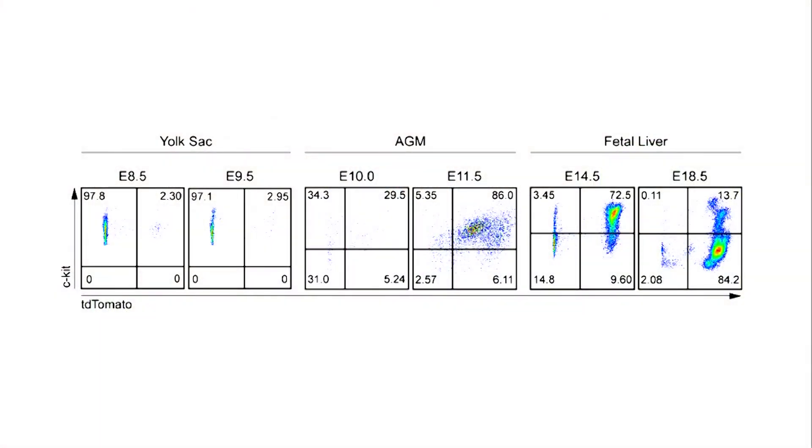The other thing we looked at — because it was quite controversial — is where do these cells come from? We found that they come from a different source. Normally, microglia come from the yolk sac very early in embryogenesis and go directly to the brain. What we found is that these particular cells start in the yolk sac, then go to fetal liver, then to the AGM, and finally get to the brain many days later. We can see that they're made in the yolk sac, go to the AGM, get amplified, then go to the fetal liver, get further amplified, and then finally go into the brain.